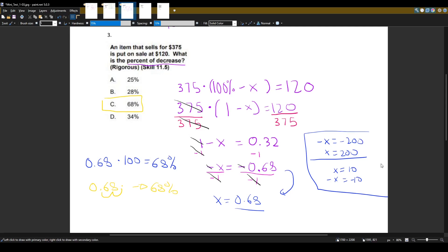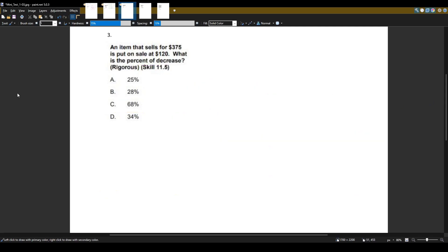Our item of $375 was decreased by 68 percent. Let me show you one other way to do this using the power of multiple choice. Let's look at $375. Let's pretend this was put on sale for 50 percent.